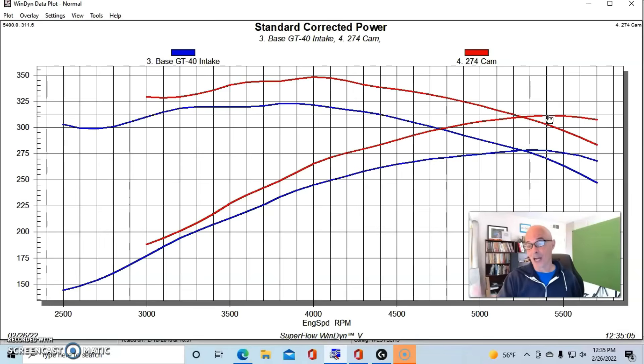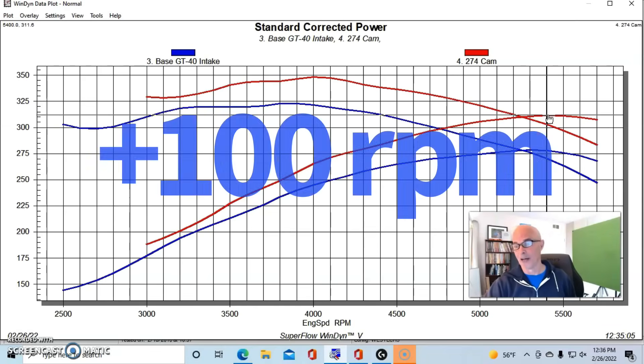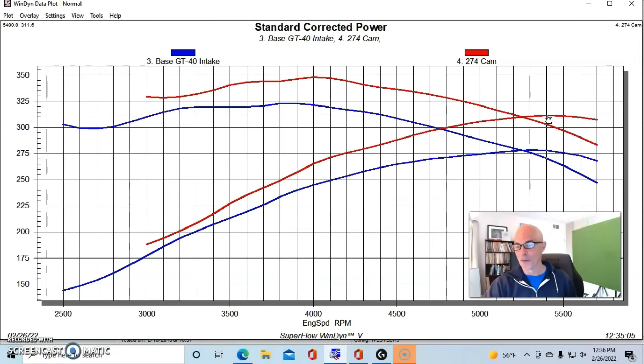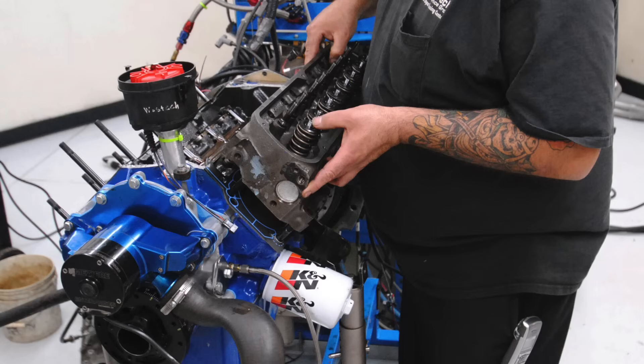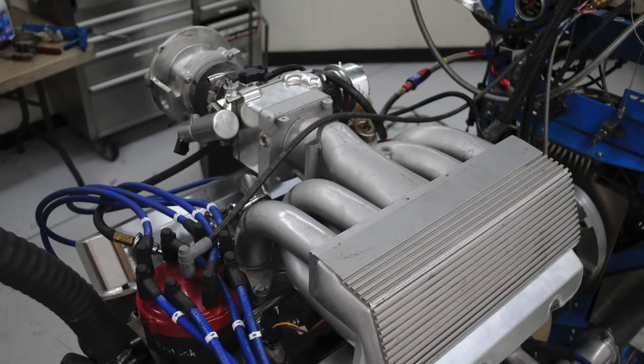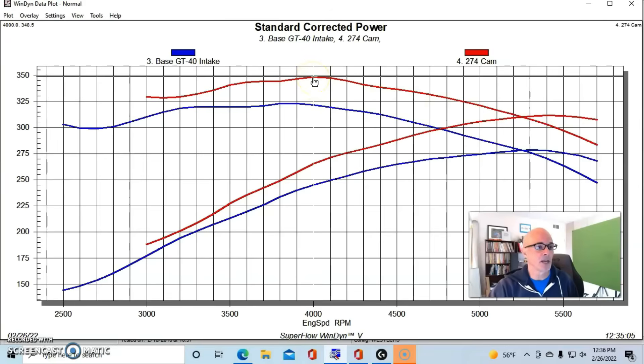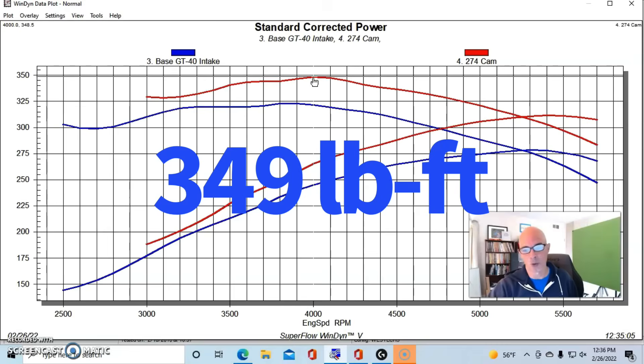Putting this much camshaft in it, going from the factory cam to one that's a 224/232, didn't shift the power peak out to 6,000 RPM. It only changed it by a couple hundred RPM. We went from 5,300 to 5,400. So something else was already determining where this thing wanted to make peak power. And that's the stock heads, and probably most importantly, that GT40 intake.